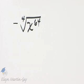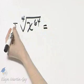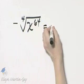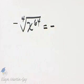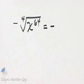Let's simplify this radical expression. I will begin by rewriting this negative sign since it's outside the radical expression. Then I want to simplify the fourth root of x to the 64th power.